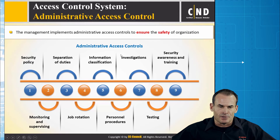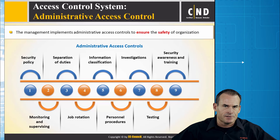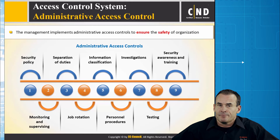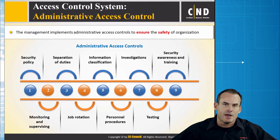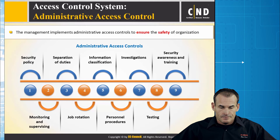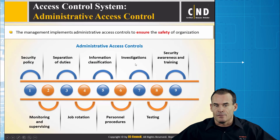Administrative access controls are implemented by management to ensure the safety of an organization. Examples include security policy, monitoring and supervising, separation of duties, job rotation, and information classification. Separation of duties ensures you are never given too much ability to perform any malicious function. Job rotation rotates you through job roles to detect any wrongdoing. These are our categorical examples of administrative access controls.